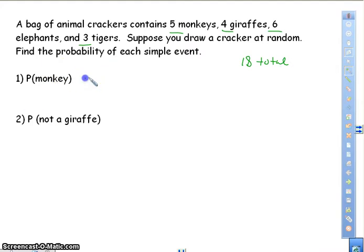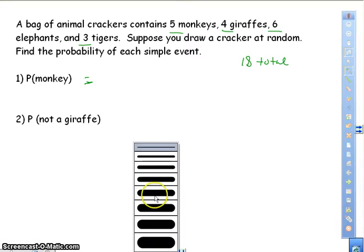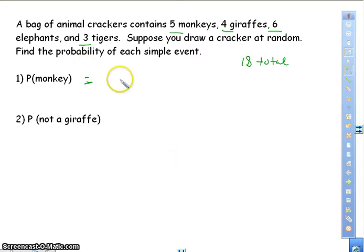So first I'm going to find the probability of getting a monkey, pulling a monkey out of this bag of animal crackers. So I know it's going to be out of eighteen total, and there are five monkey animal crackers. I can't simplify and you're done. So simple events is just taking the number of favorable outcomes over the number of total.